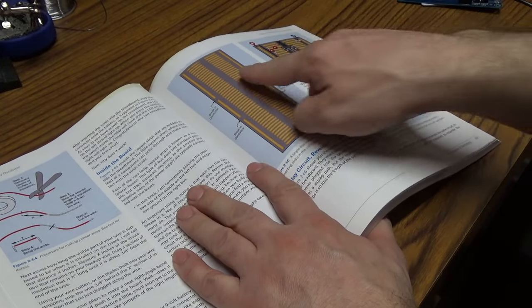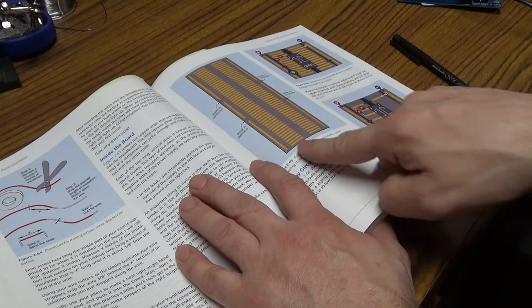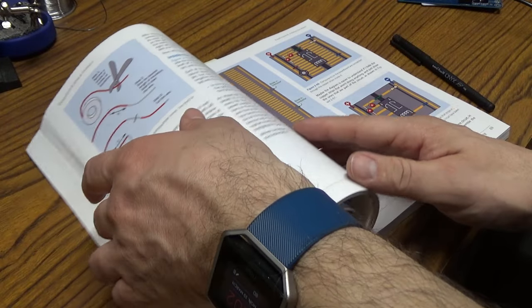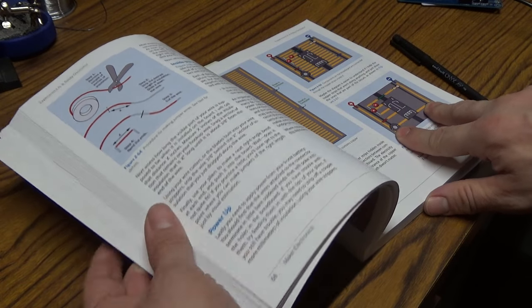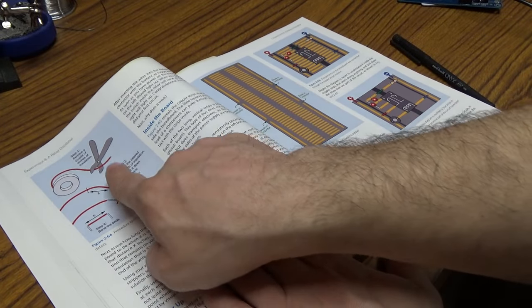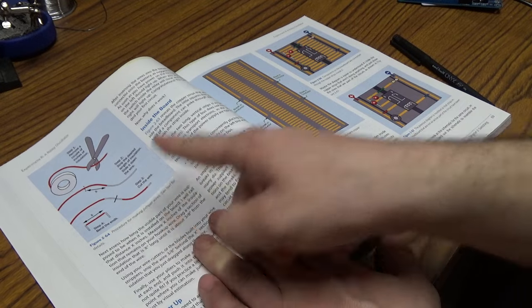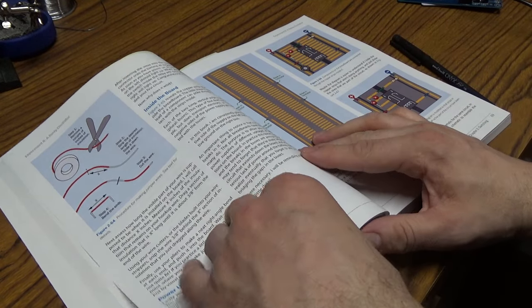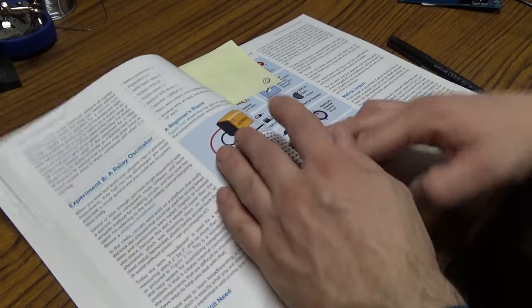So like for instance this experiment actually talks about what a breadboard is, how a breadboard is set up, you know why it works. It talks about how the various rows are wired together and what your circuit actually looks like wired into the breadboard. And then they go over techniques such as how to cut wires in order to hook up the components on the breadboard.